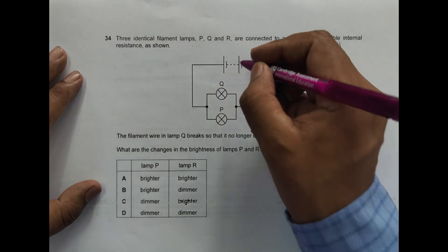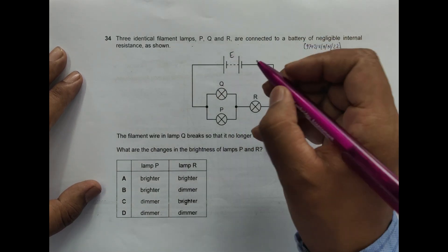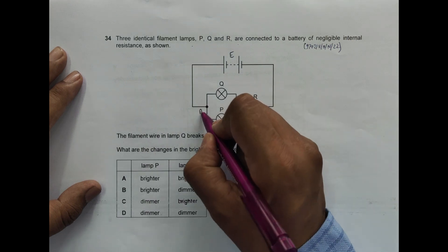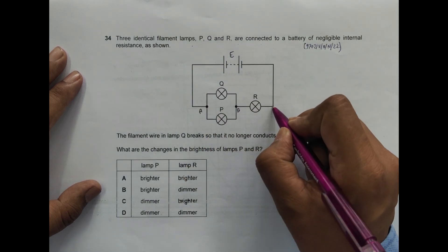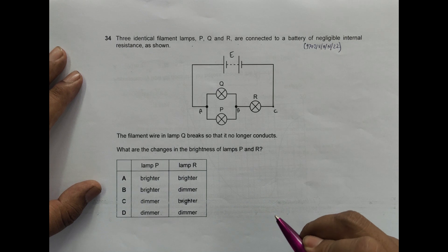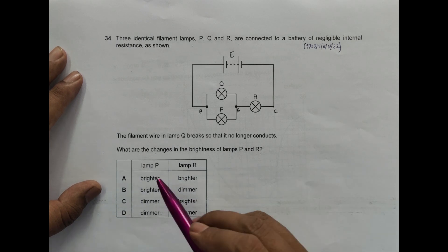the power they are consuming. So let us give some symbols here. This is A, let's say this is B, let us say this point is C. Now what happens is we have to compare the brightness of lamps P and R.